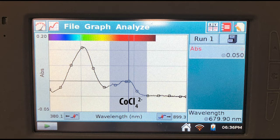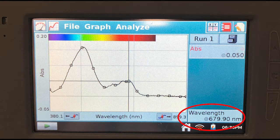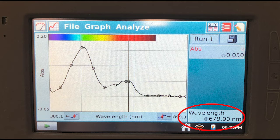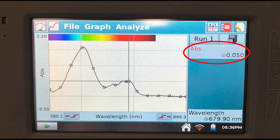We're just going to focus on this peak that's on the right, which is due to our product. The lambda max of this peak, the wavelength where it absorbs the most light, is 679.90 nanometers. This is the wavelength where we're going to be collecting the absorbance of all of our samples. Notice that the absorbance of the room temperature sample is 0.050.